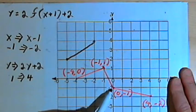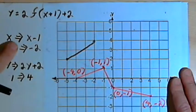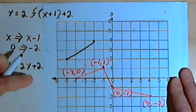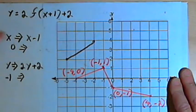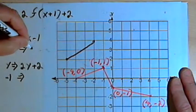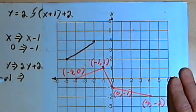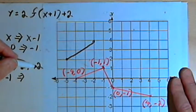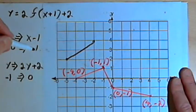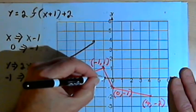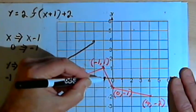I've got another point at 0, negative 1. x is 0, y is negative 1. We want to take that x and subtract 1 from it — so 0 minus 1 is negative 1. We want to take the y, which is negative 1, and multiply it by 2, so that's negative 2, and then add 2, so that becomes 0. So I should have a point at negative 1, 0. There's negative 1, 0 — I can connect those.